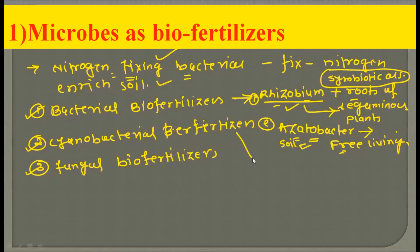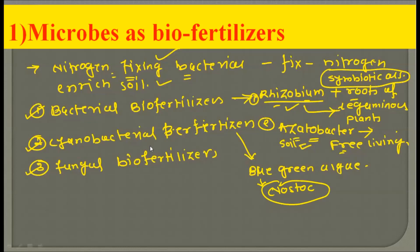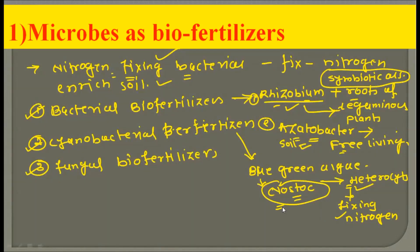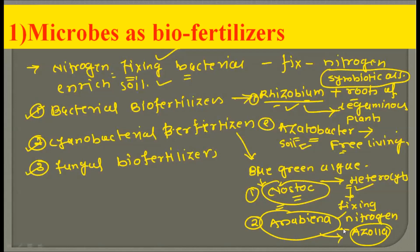The second type is cyanobacterial biofertilizers. Cyanobacteria are also called blue-green algae. A famous example is Nostoc, which belongs to the cyanobacterial group. Cyanobacteria like Nostoc have special sites in their bodies called heterocysts — specialized cells for fixing atmospheric nitrogen. The second example is Anabaena, which forms a symbiotic association with a fern called Azolla. The symbiotic association between Anabaena and Azolla is able to fix atmospheric nitrogen.